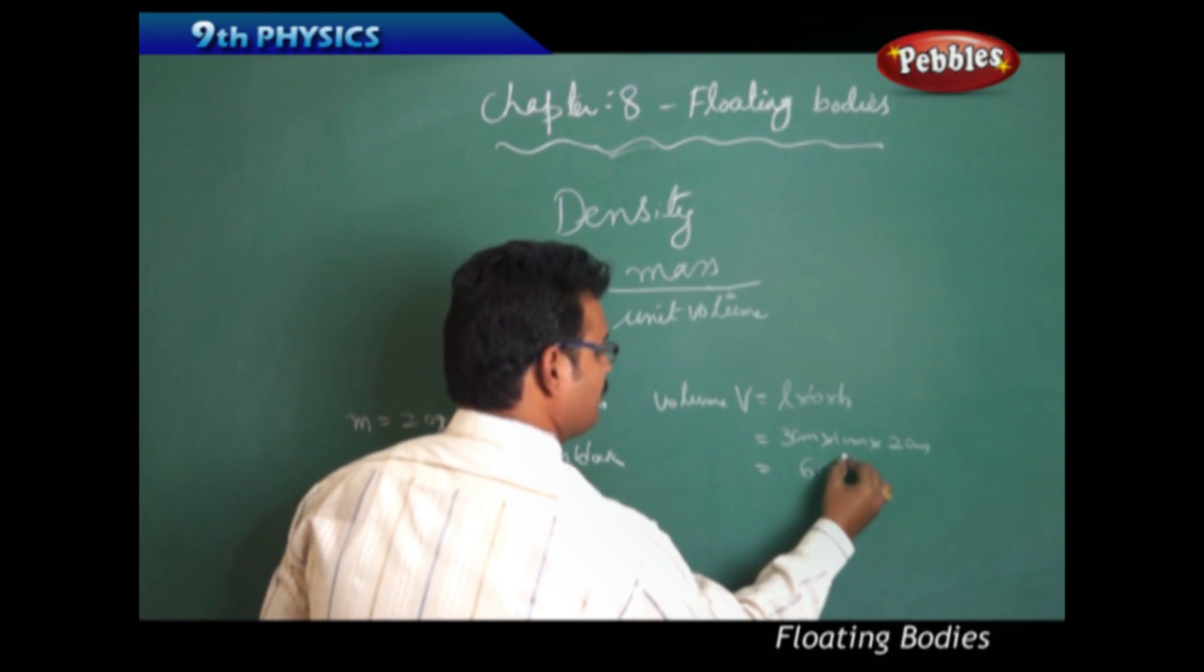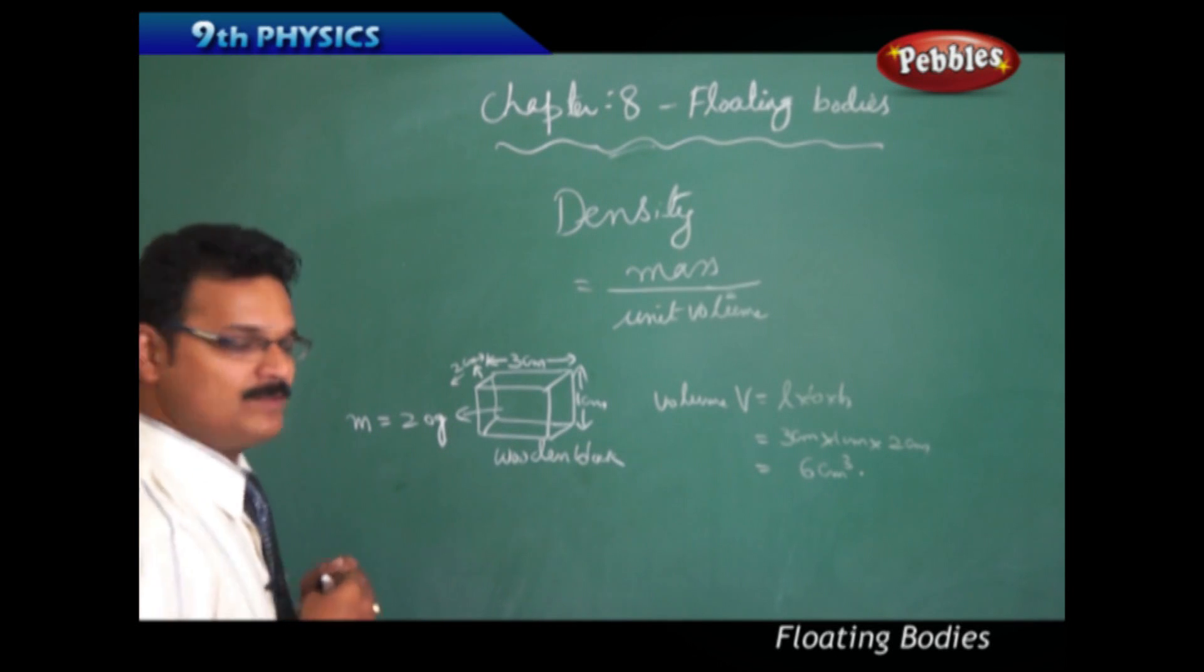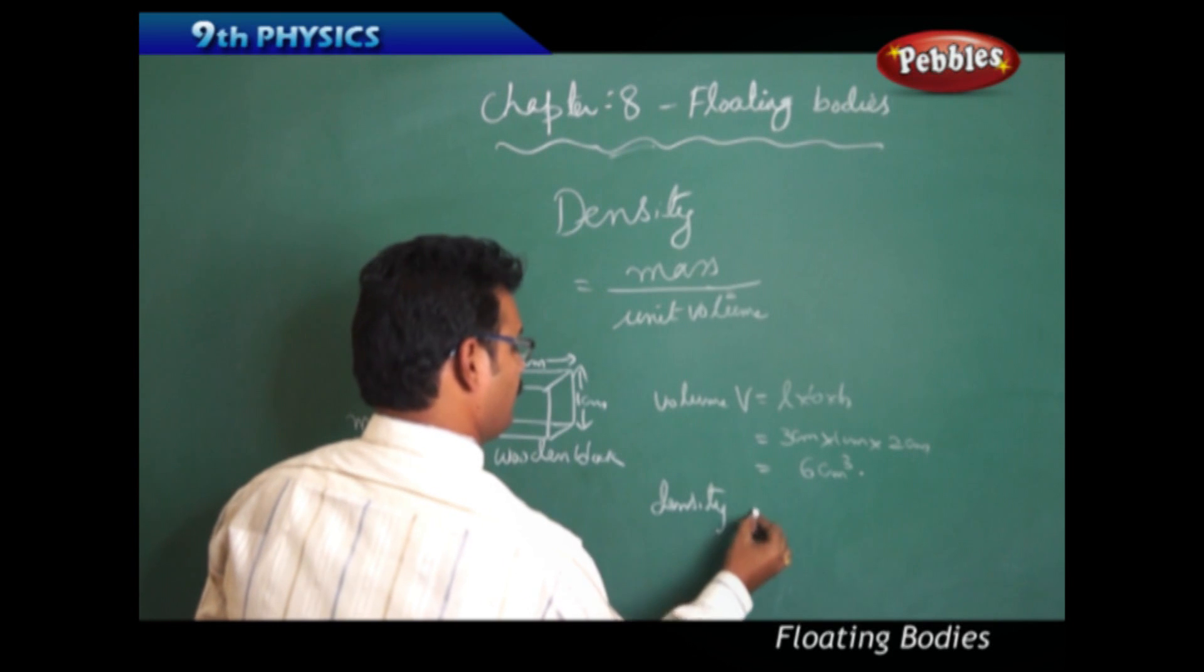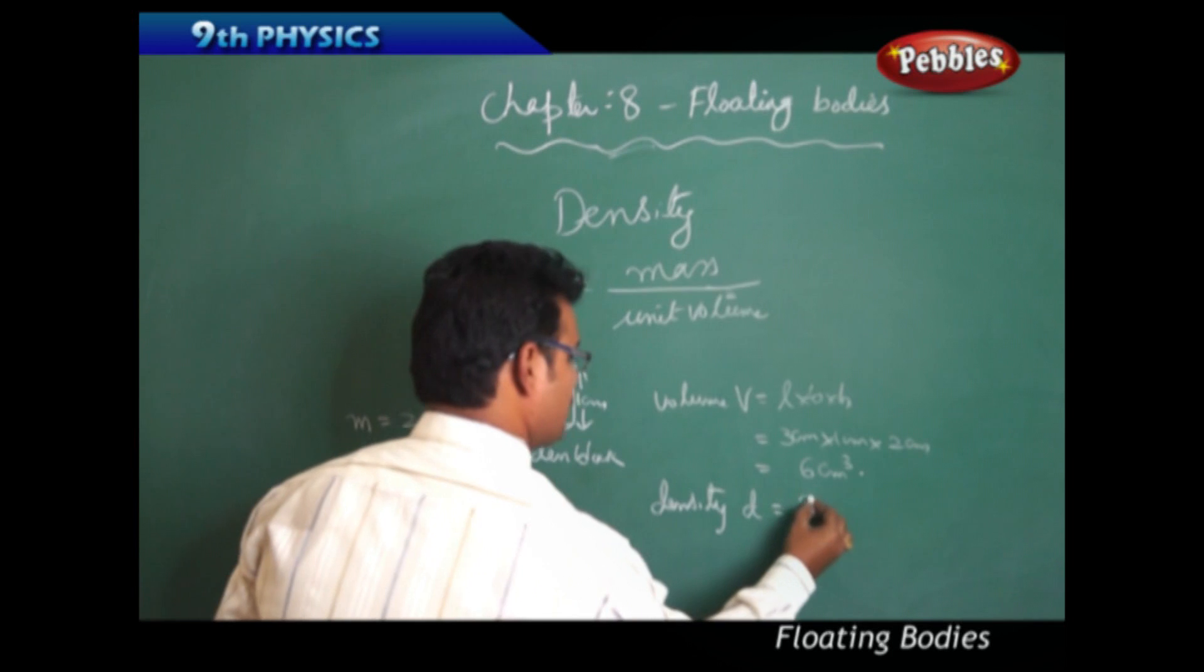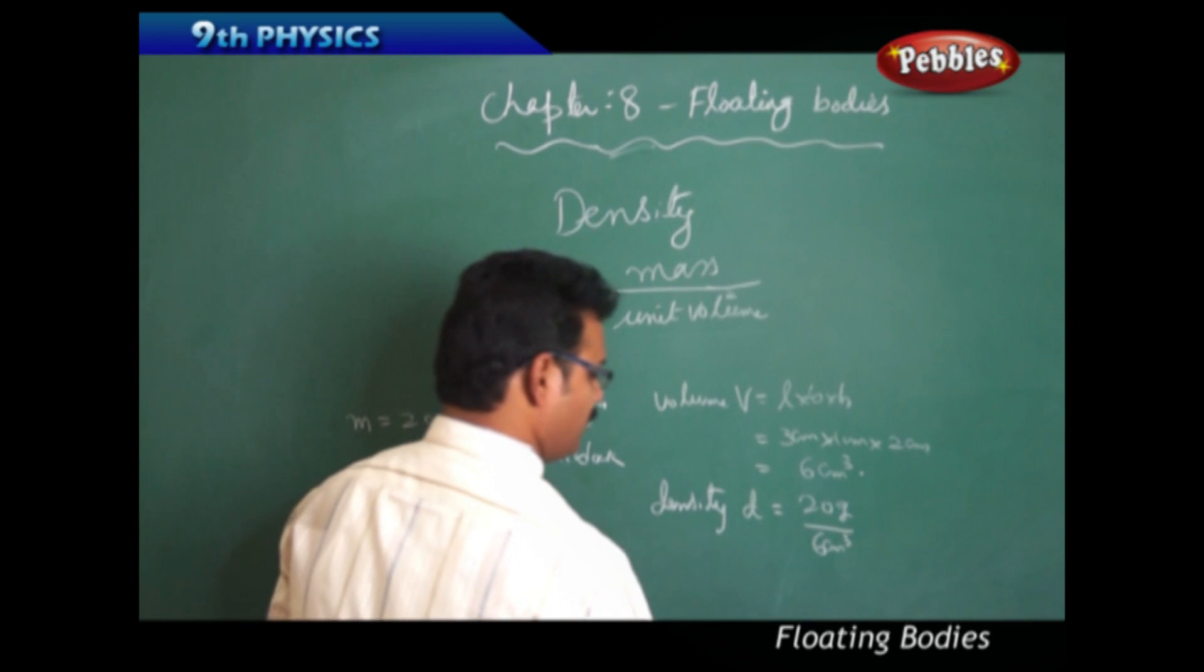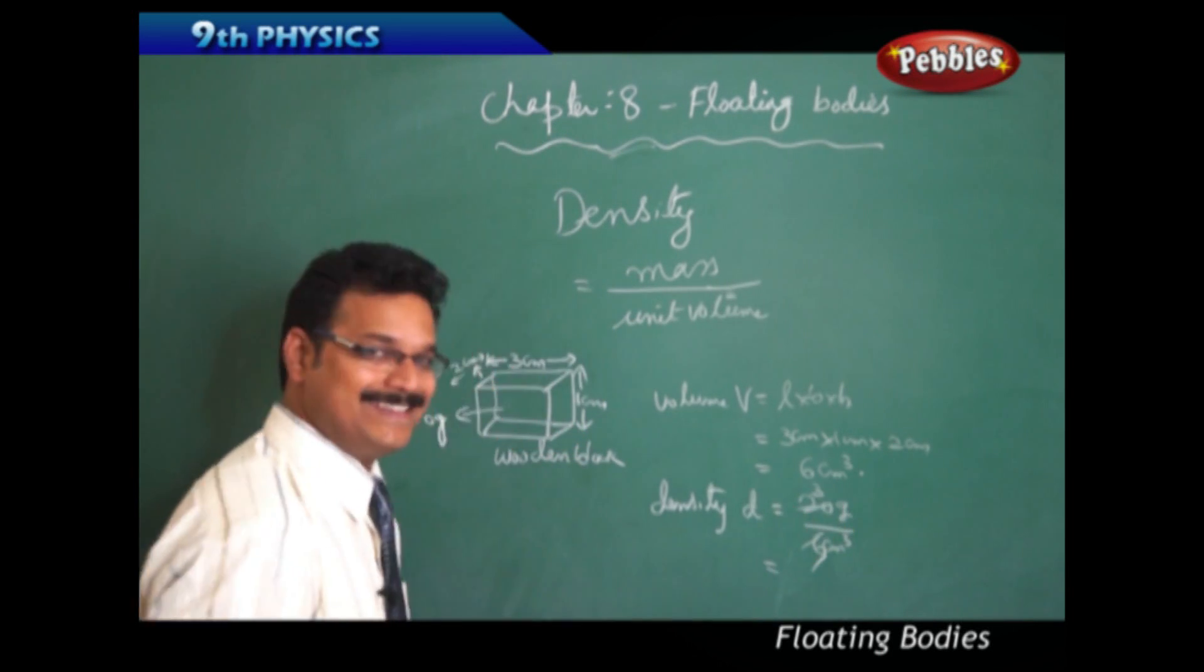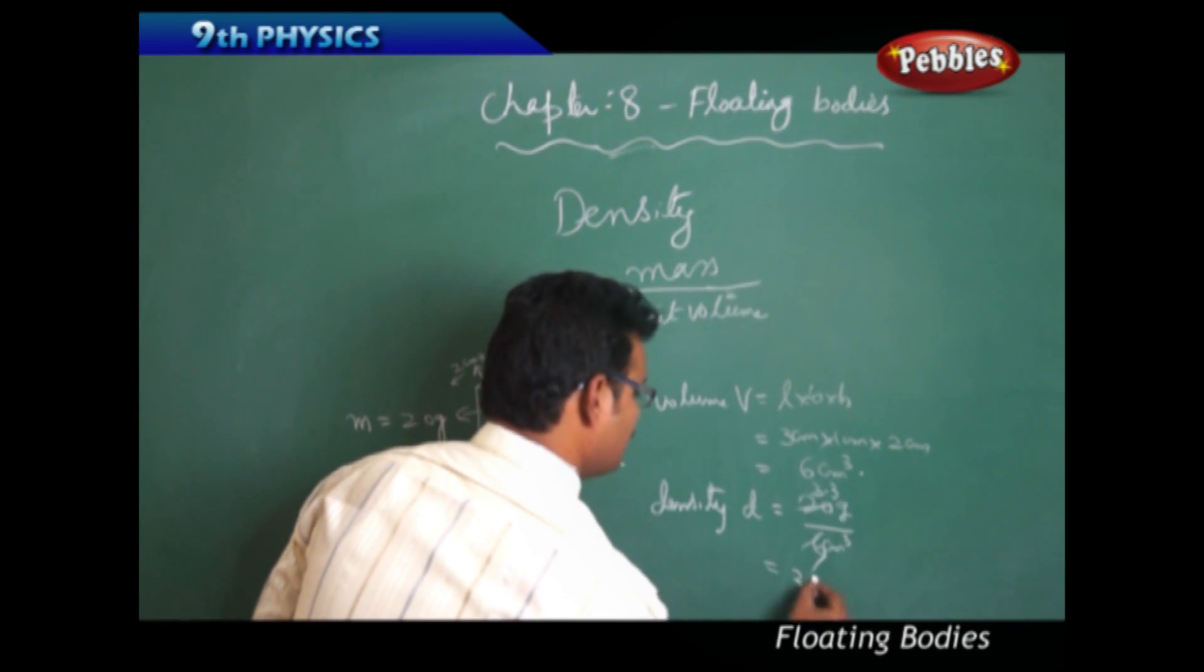Mass is 20 grams, volume is 6 centimeter cube. Therefore, density d equals mass by volume. So mass is 20 grams and volume is 6 centimeter cube. If you simplify this: six ones are six, six threes are 18, 20 divided by 6 equals approximately 3.3.